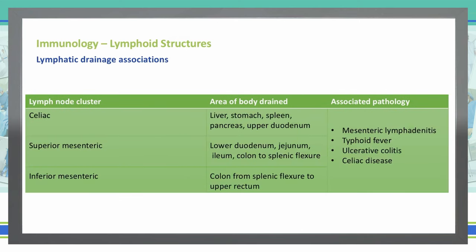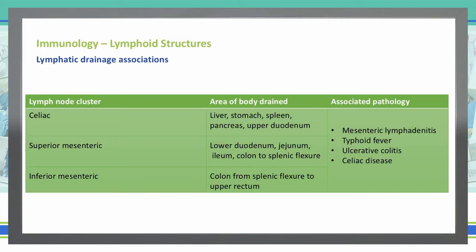The next clusters are the celiac, superior mesenteric, and inferior mesenteric — grouped together because their pathologies are the same. The celiac drains the liver, stomach, spleen, pancreas, and upper part of the duodenum. It does not touch any of the other abdominal systems that the superior and inferior mesenteric lymph nodes will, even though they share associated pathologies.